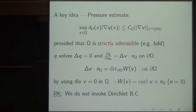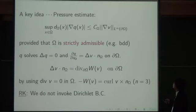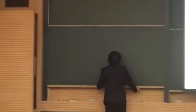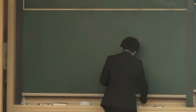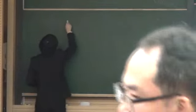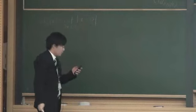To apply the Masuda-Stewart argument, we invoke the pressure estimate by velocity — this is a key ingredient. We prove by a contradiction argument: we estimate the sup-norm of gradient Q multiplied by the distance function d_omega by the sup-norm of gradient V on the boundary. This constant is dependent on domain omega but independent of V and Q. Here d_omega is the distance function from the boundary. This pressure estimate is a key.